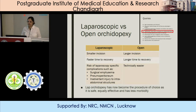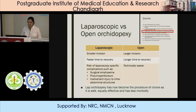Open orchiopexy is done for palpable testes, whereas laparoscopy is done for impalpable testes. In the past, open orchiopexy for impalpable testes was done with a large abdominal incision to dissect and look for testicular tissue, but after the advent of laparoscopy that has not been practiced. Laparoscopic orchiopexy offers a smaller incision and faster recovery time, although general risks of laparoscopic complications are present, such as surgical emphysema, pneumoperitoneum, and inadvertent injury to intra-abdominal structures. Open orchiopexy requires a larger incision and longer recovery time, although it is technically easier.